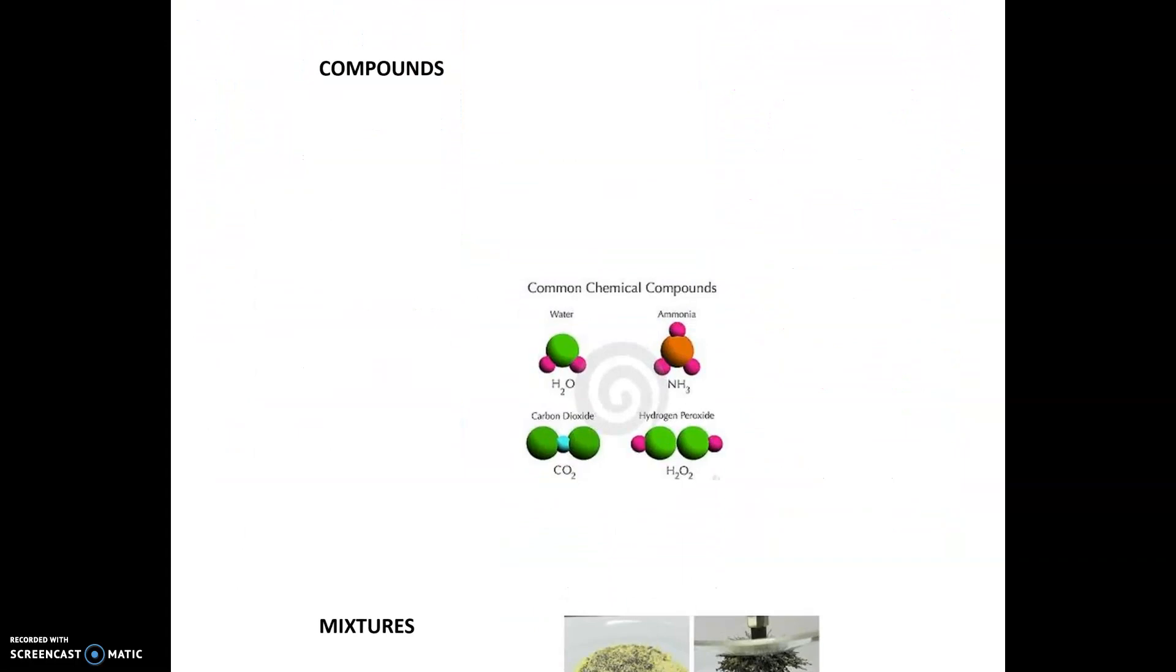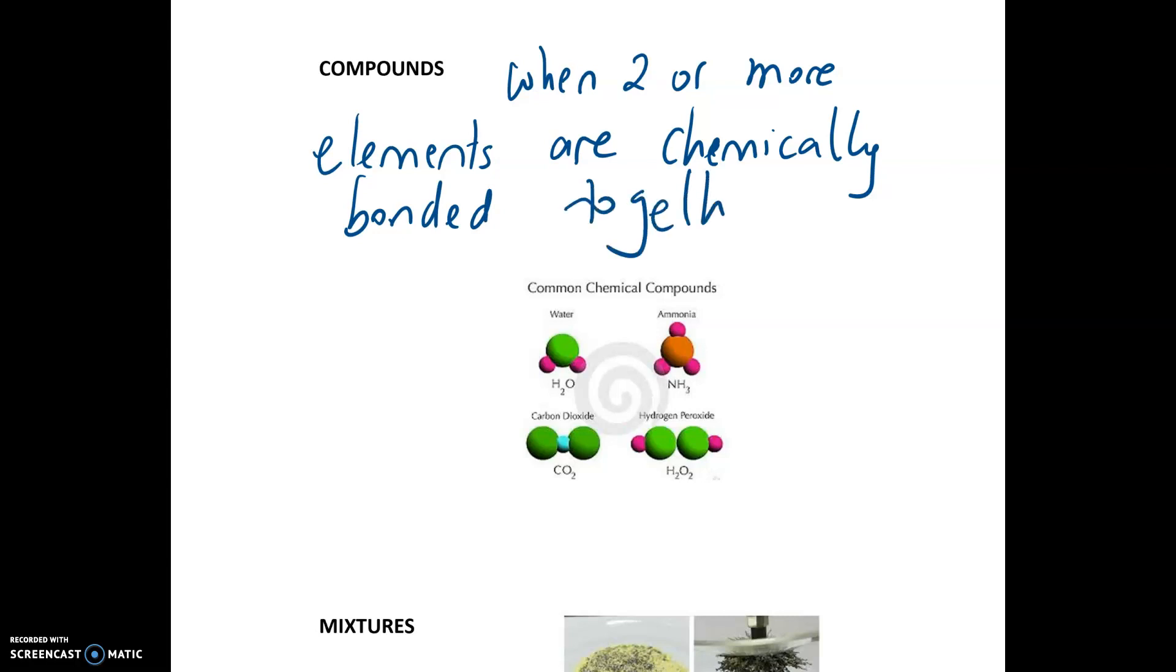A compound is when two or more elements are chemically bonded together. Again, if you write this down for your exams for GCSE, that's the definition.